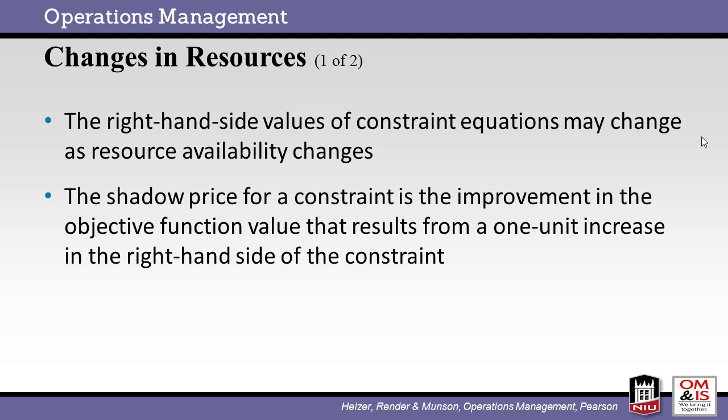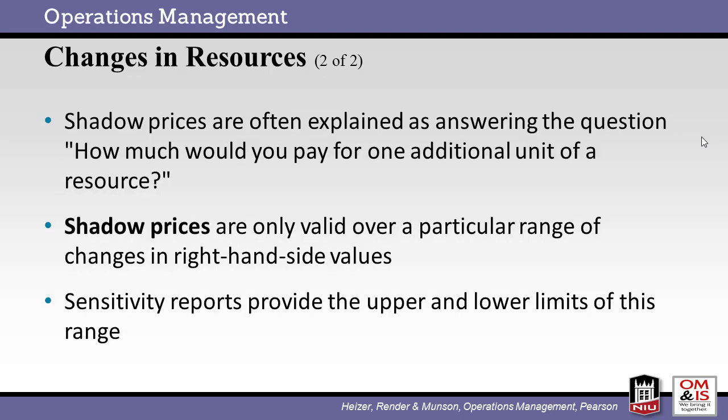In the business world, change is not uncommon. Resources change all the time. Often, we may ask how much of a difference additional resources would make. We can test the result by changing the constraints in our analysis. The term shadow price refers to the added value of relaxing a constraint. For example, if I relax the resource constraint and add an employee, how much profit will be added? The shadow price is only valid for a particular range of changes. Sensitivity reports are used to define the range of changes.